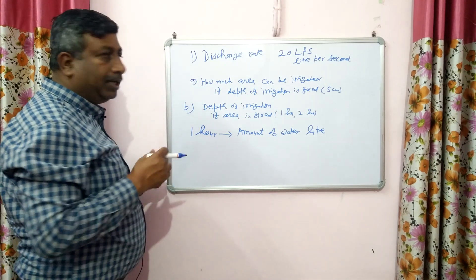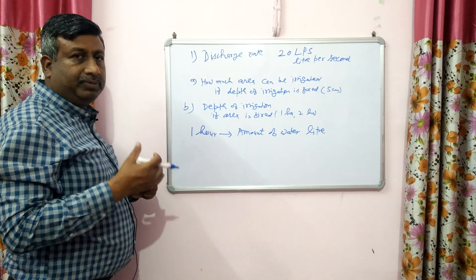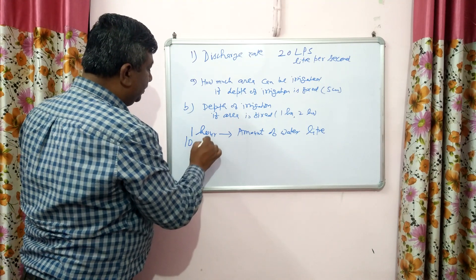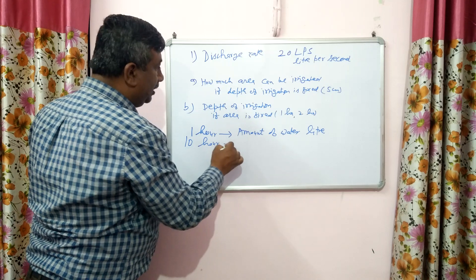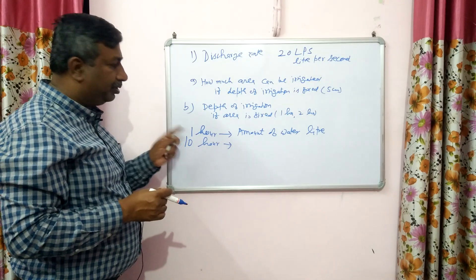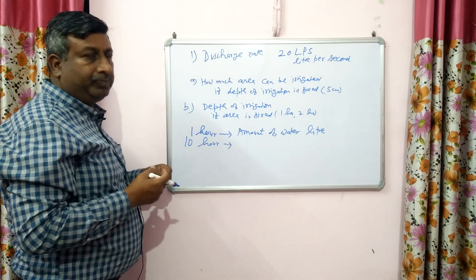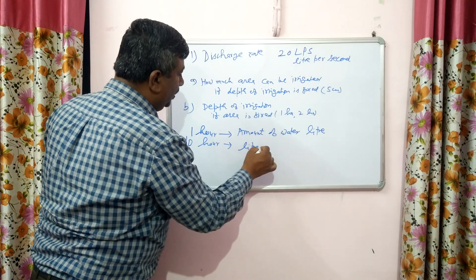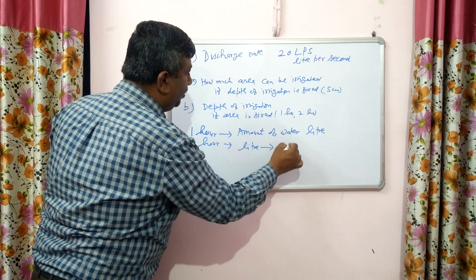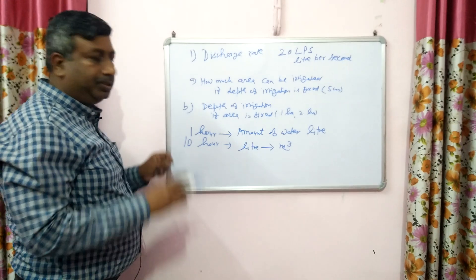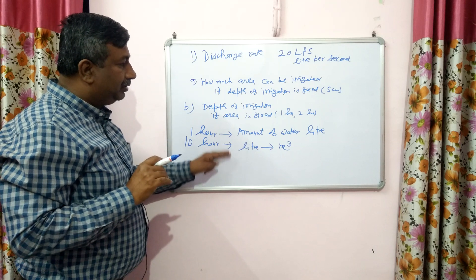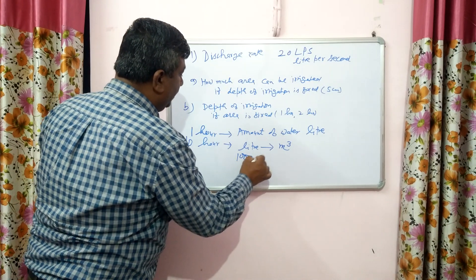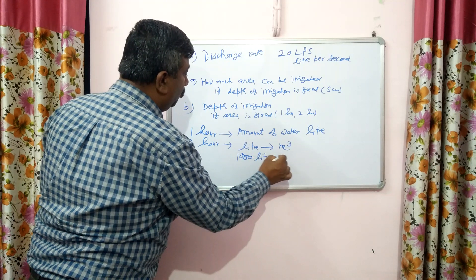Then calculate the amount of water in the given time. Suppose the given time is 10 hours — calculate the amount of water in 10 hours. Then convert it into cubic metres of water. This is very important: convert litres into cubic metres, and 1000 litres of water is equal to 1 cubic metre.